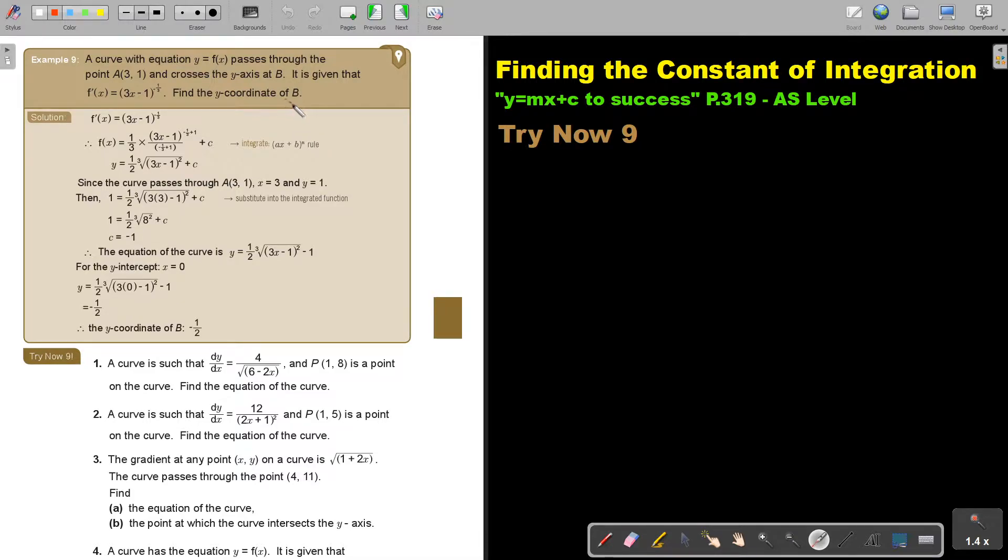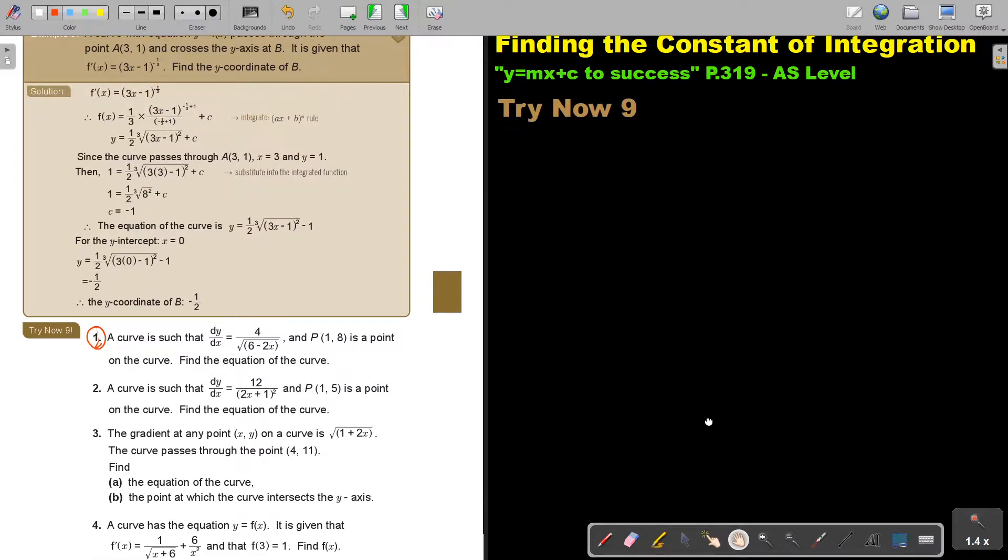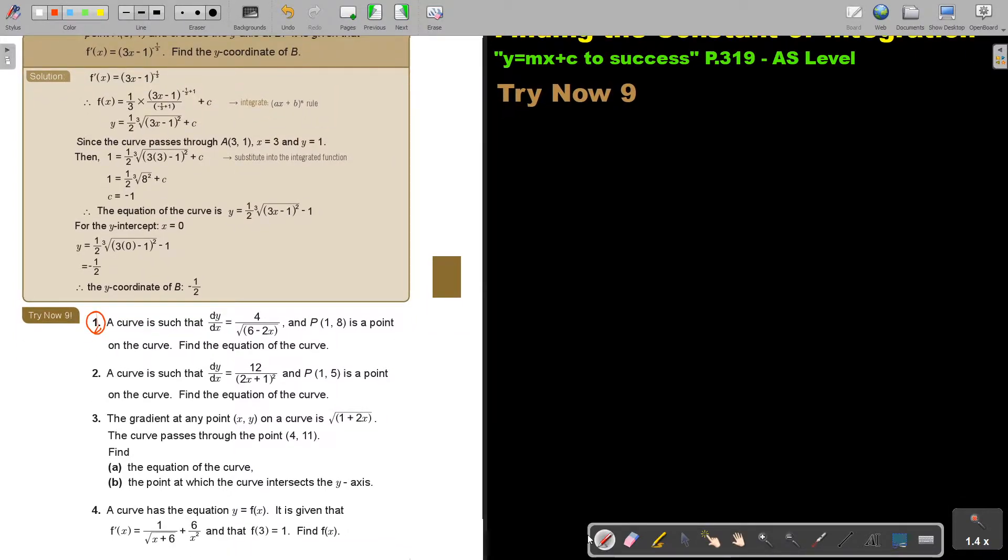So the point will be 0 and negative 4 halves. But they only asked for the Y coordinate. And it's very important, especially in this level, that you just answer what they asked for.